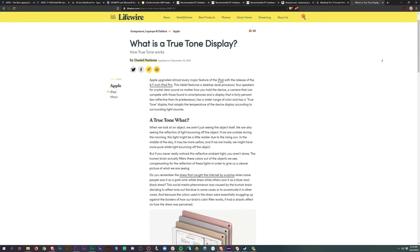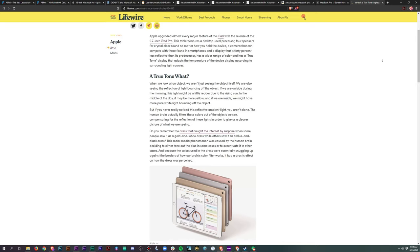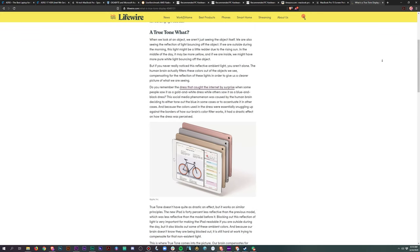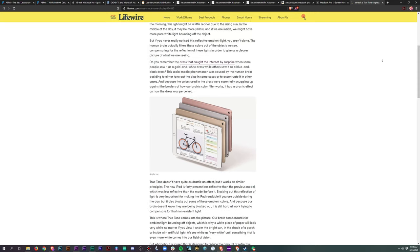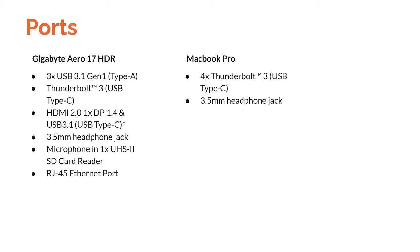The MacBook Pro does offer True Tone, which alters the color temperature of the display to help it look as color accurate as possible in changing lighting conditions — essentially keeping whites looking white regardless of ambient light. Personally it was hard to pick a winner between these two screens since they're both fantastic, but the HDR and the matte screen gave a slight edge to the Aero 17. Either screen will be impressive.